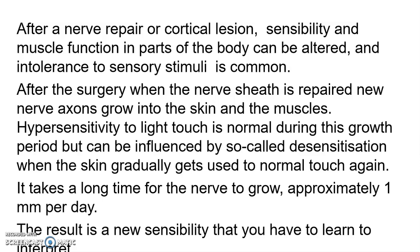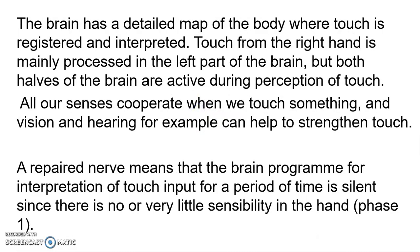The peripheral nerve grows only approximately 1 mm per day. The result is a new sensibility that the patient has to learn to interpret. The brain has a detailed map of the body where touch is registered and interpreted — the somatosensory area and Brodmann's areas of the brain each represent specific functions. For example, touch on the right hand is mainly processed in the left part of the brain, though both hemispheres are active during perception of touch.